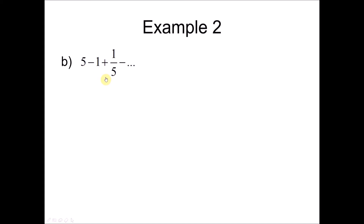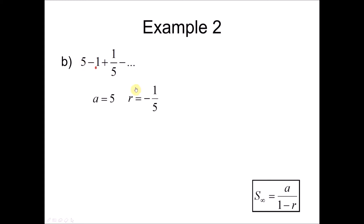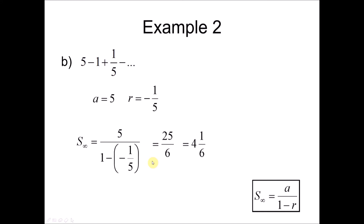For the next geometric series, to find the sum to infinity we use the same formula where a = 5 and r = -1/5. Substituting the values into the formula and calculating, we get 25/6 divided by 1 over 6, giving the answer 25/6.